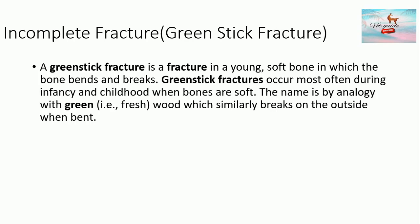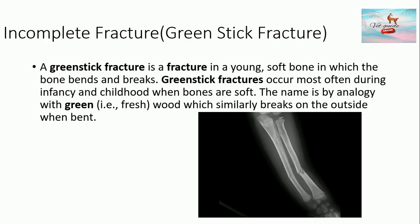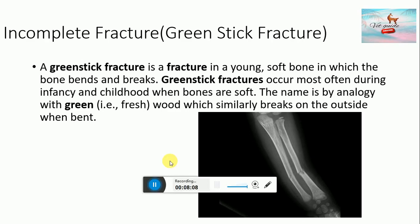The fractures previously discussed were complete fractures, which means the complete bone breaks. In this section we will discuss incomplete fractures, also known as greenstick fractures. A greenstick fracture is a fracture in a young soft bone in which the bone bends and breaks. Greenstick fractures occur most often during infancy and childhood when bones are soft. The name comes by analogy with green fresh wood, which similarly breaks on the outside when bent.